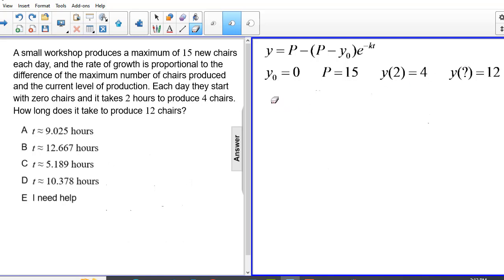So making the appropriate substitutions, we have 4 is equal to 15 minus the quantity 15 minus zero times e to the negative 2k. Again, I am using this information right here, that when t is equal to 2, y is equal to 4. Following our basic algebraic steps, we get 11 over 15 is equal to e to the negative 2k power.